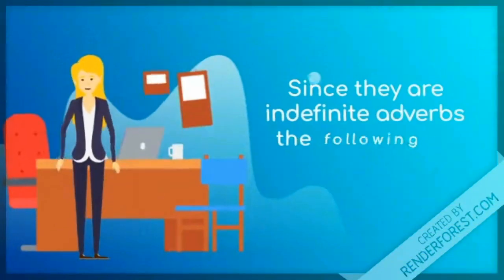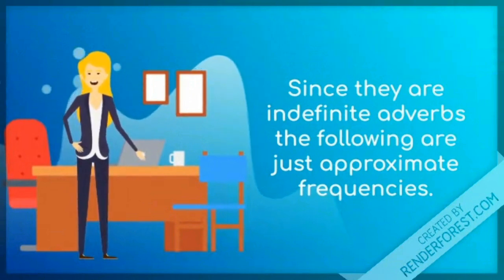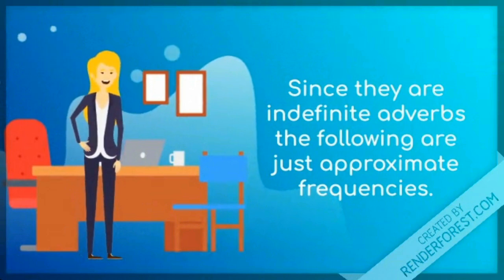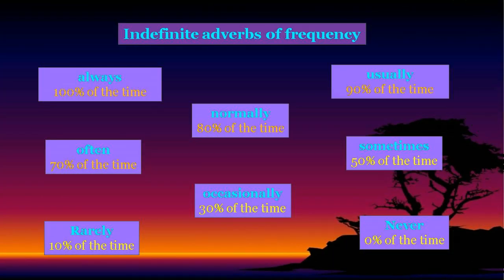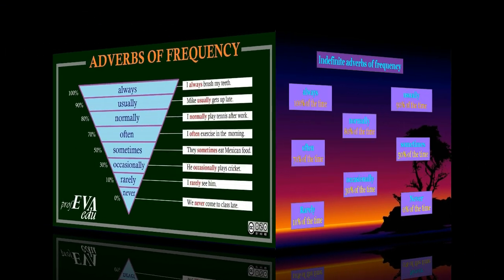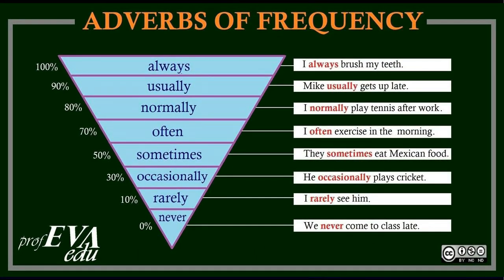Since they are indefinite adverbs, the following are just approximate frequencies. The image gives you a clear idea of the frequency percentage of the indefinite adverbs. 'I always brush my teeth' — the adverb 'always' shows 100% frequency. 'Mike usually gets up late' — 'usually' shows approximately 90% frequency. 'I normally play tennis after work' — 'normally' shows 80% frequency of action.